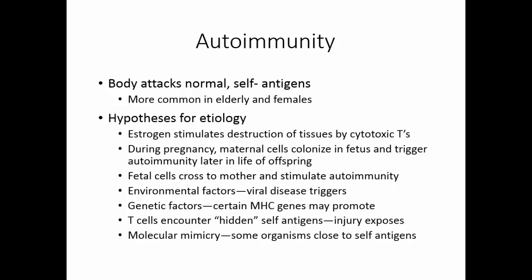Molecular mimicry is another theory. It's believed that some bacteria or virus may enter the body, the body makes an immune response to them, but we don't really get sick because they're not very virulent. But as a result of these antibodies, we have antibodies that are very similar to self-antigens, and these now attack self-antigens. And finally, there may be a failure of the normal control mechanisms. Those regulatory T cells are part of what turns off the immune response. If they quit working, then we don't have an off switch for our immune system. This may explain why we see autoimmunity more in elderly people.